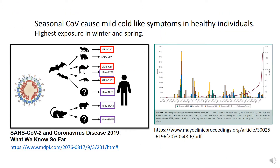Coronaviruses that cause human disease can be pathogenic or cause mild cold-like symptoms. The pathogenic coronaviruses include SARS-CoV-2, MERS, and SARS-CoV. There are four additional seasonal coronaviruses that cause human infections: 229E, NL63, OC43, and HKU1.